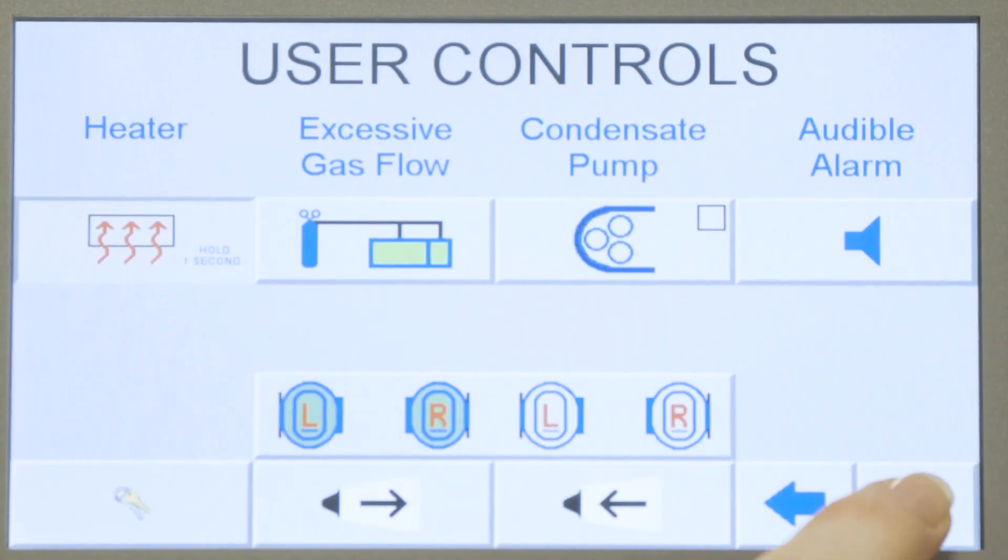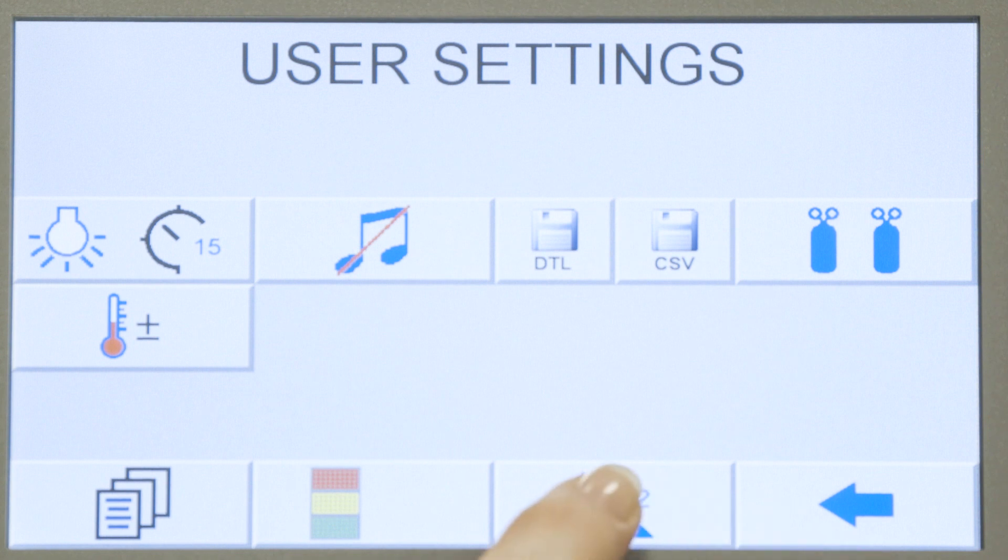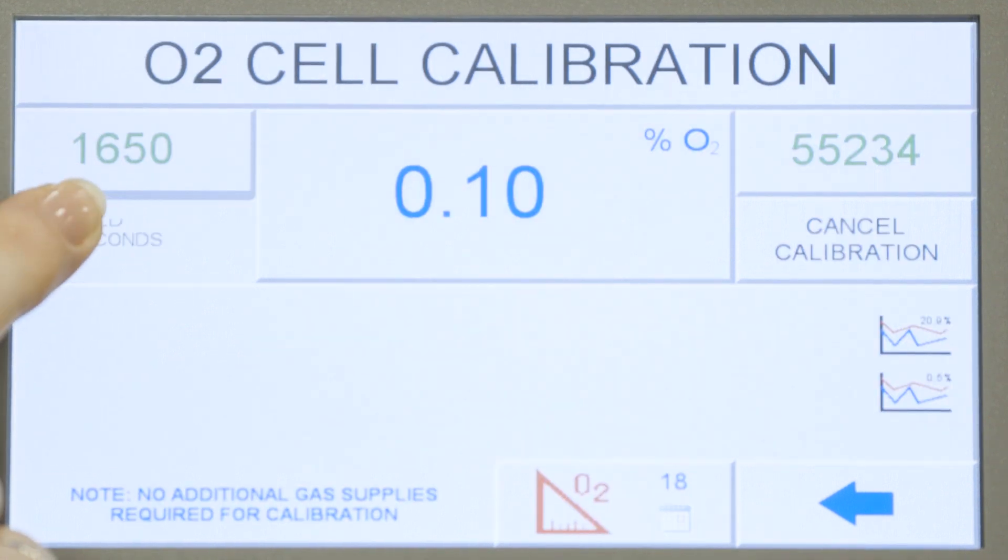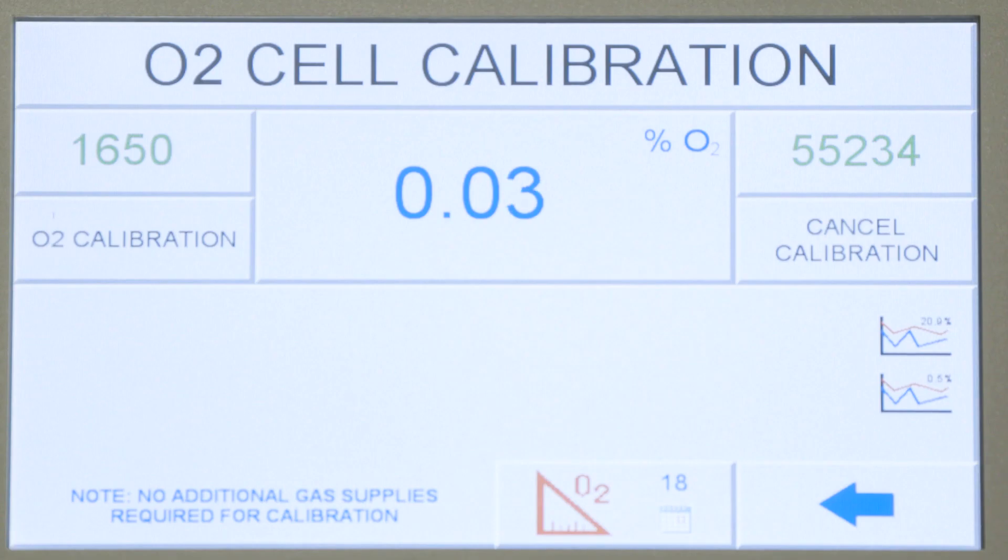Our patented fully automated oxygen calibration routine is activated via the touch screen, with no need to touch or remove the sensor. This saves time, reduces the risk of user error and provides confidence in the accuracy of results.